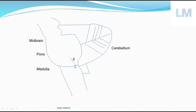If the tumor enlarges, the next cranial nerve to be affected — more medially at the pontomedullary junction — is the seventh cranial nerve, the facial nerve. It is a motor nerve to the face, supplying the muscles of facial expression. So if the tumor compresses the seventh cranial nerve, the muscles of facial expression will be paralyzed, and facial palsy will present.